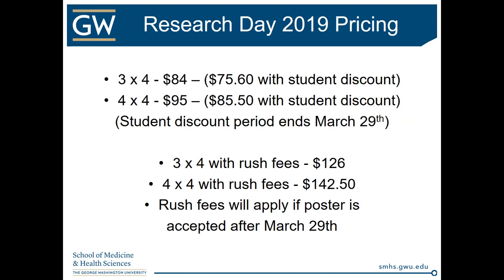Here's the pricing for Research Day: a 3x4 poster is $84, and a 4x4 is $95. With the student discount, the 3x4 goes from $84 down to $75.60 — and remember that student discount period ends March 29th. A 3x4 with rush fees goes way up to $126. So get your poster to us early.